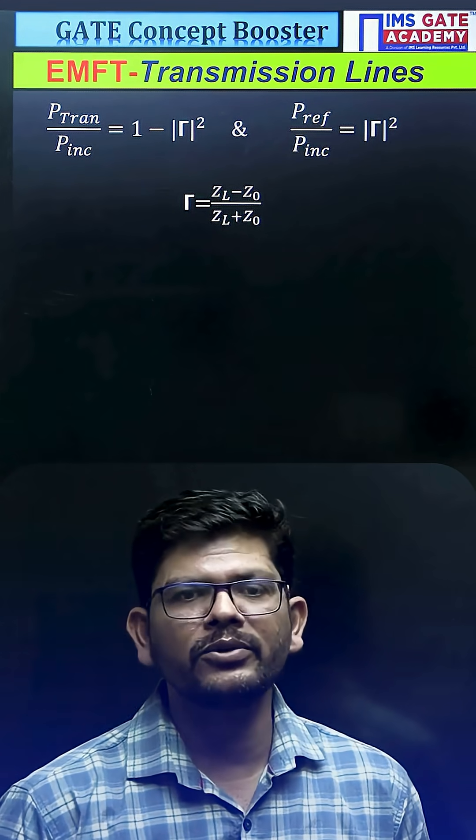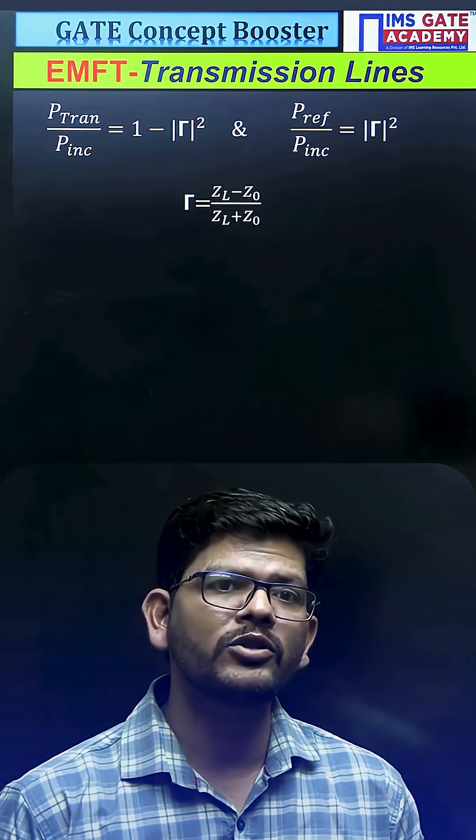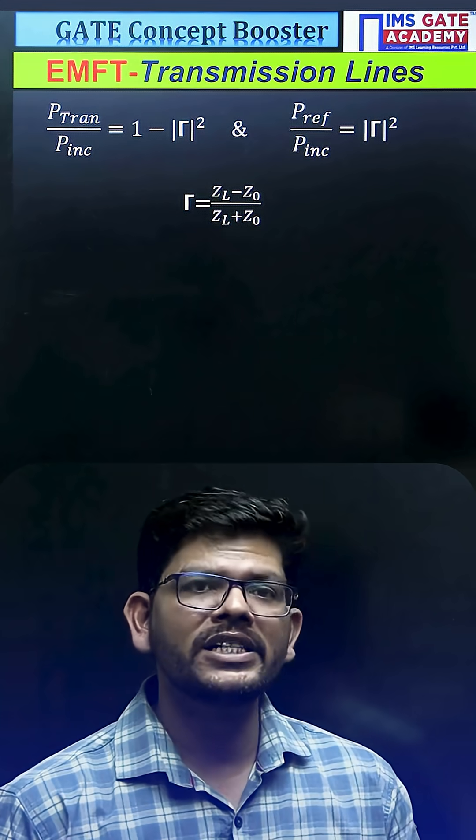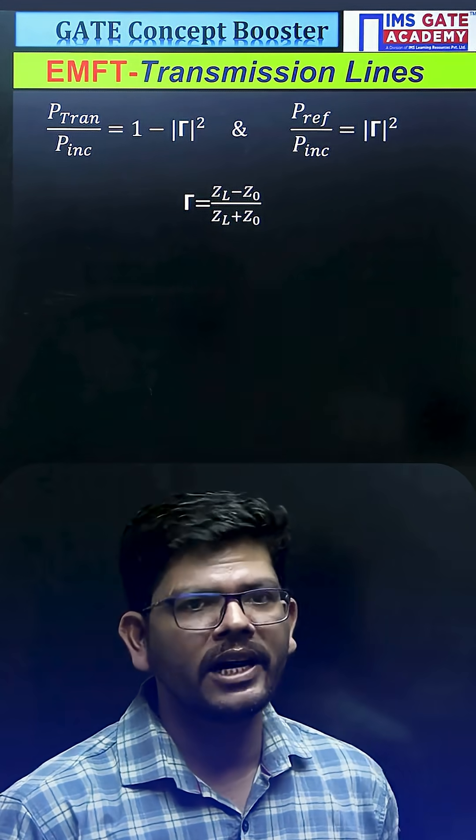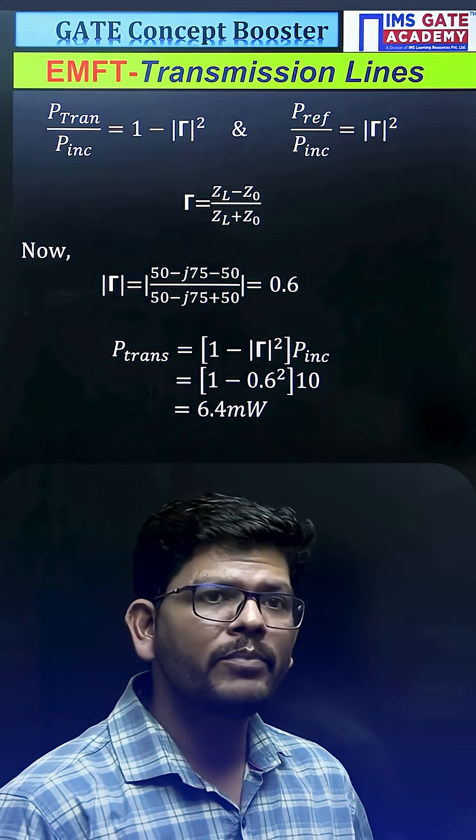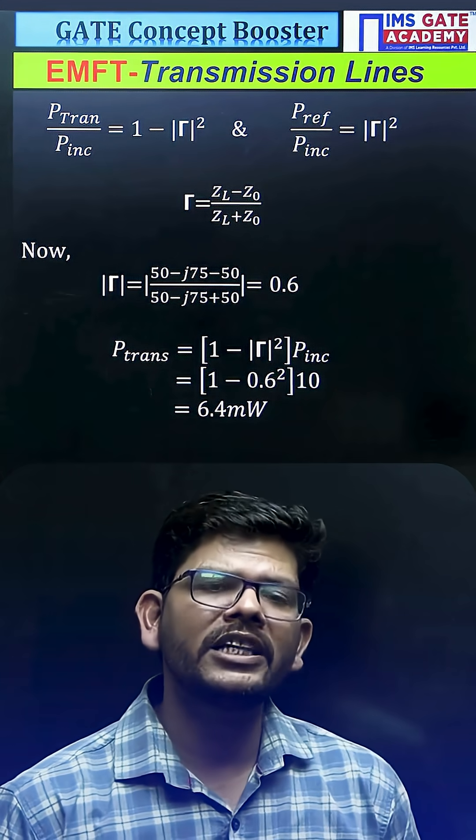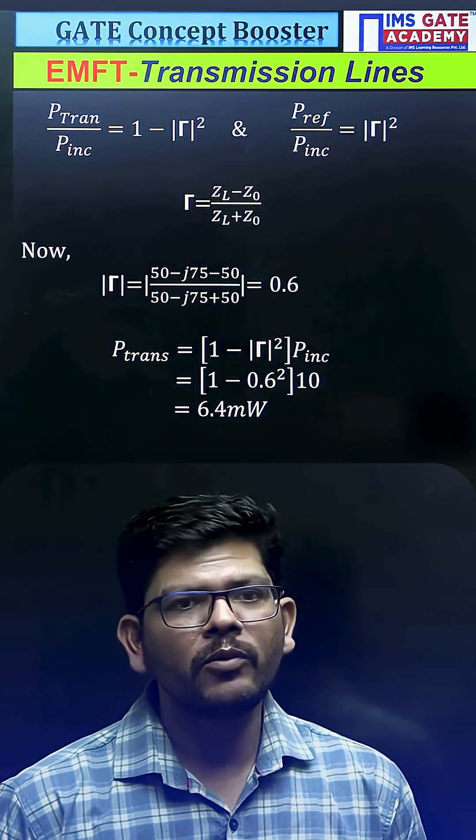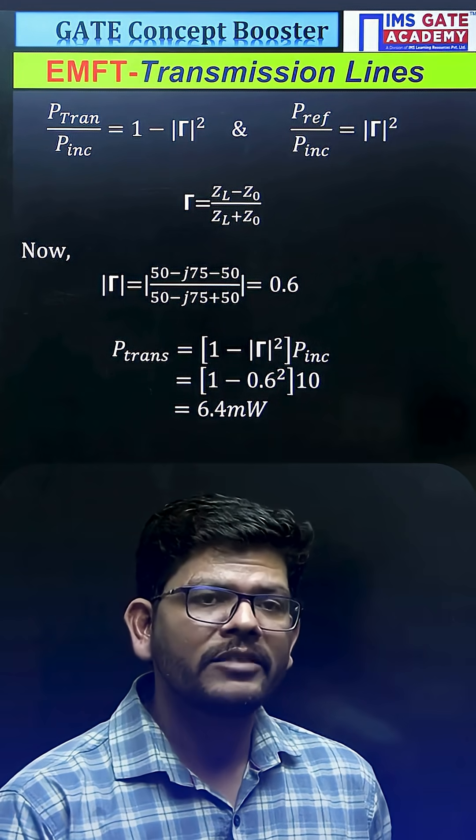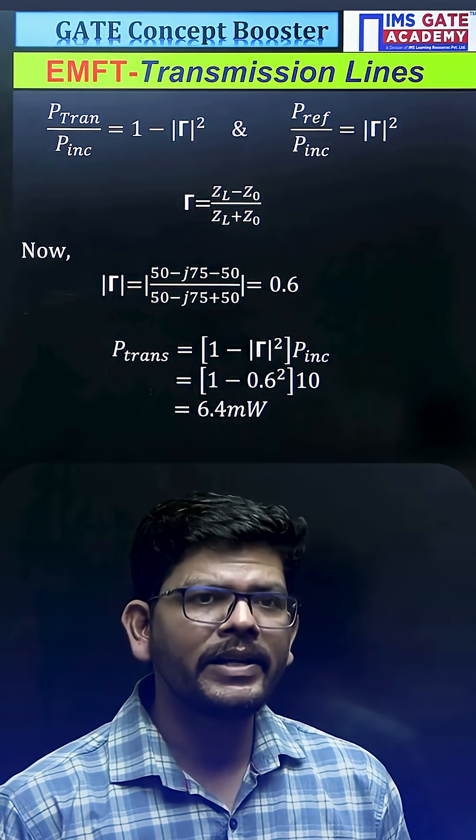Here we can calculate it in terms of reflection coefficient. We have been given the load impedance Z_L and the characteristic impedance Z_0, so we can calculate gamma. As per the given case, the gamma value will be 0.6. When we put it in the formula, we get the transmitted power as 6.4 milliwatts.